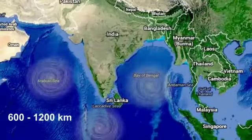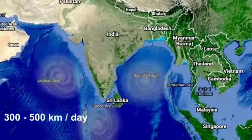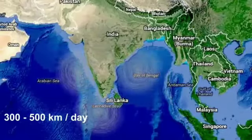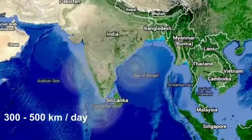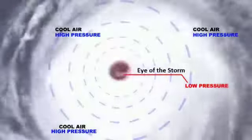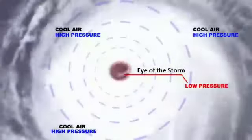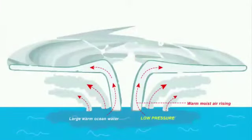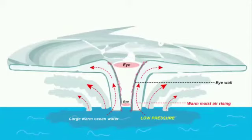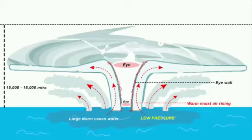So far we have seen the top view of a tropical cyclone. Now we look at the vertical view. This is the eye of the storm, and around the eye is the eye wall. The circulation of a tropical cyclone can reach up to 15,000 to 18,000 meters — that is, into the troposphere. When warm moist air rises to a certain height, it starts cooling because temperature drops with increasing altitude.